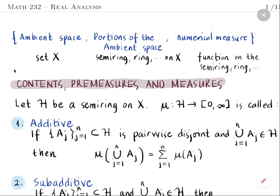This will be a non-negative function on the semi-ring, the ring, the algebra, or the sigma-algebra on X. As we might know, in the case of the ring this is closed under set differences, unions, and intersections. For instance, if we know how to count two portions of a set of marbles, then in principle we should also count their combination, their common set, and the set obtained by subtracting one from the other.